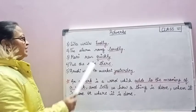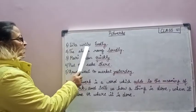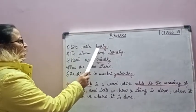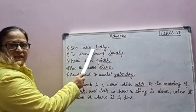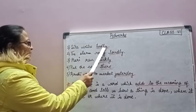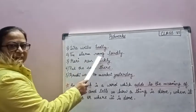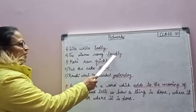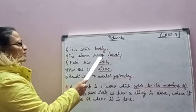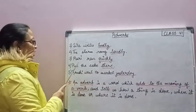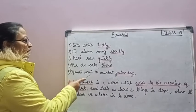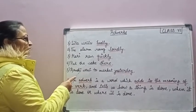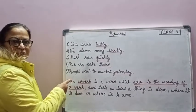Let's see some sentences. Sita writes badly. How does Sita write? Badly. The alarm rang. If we add loudly, loudly modifies the verb rang. Hari rang quickly. Quickly tells the quality of rang.